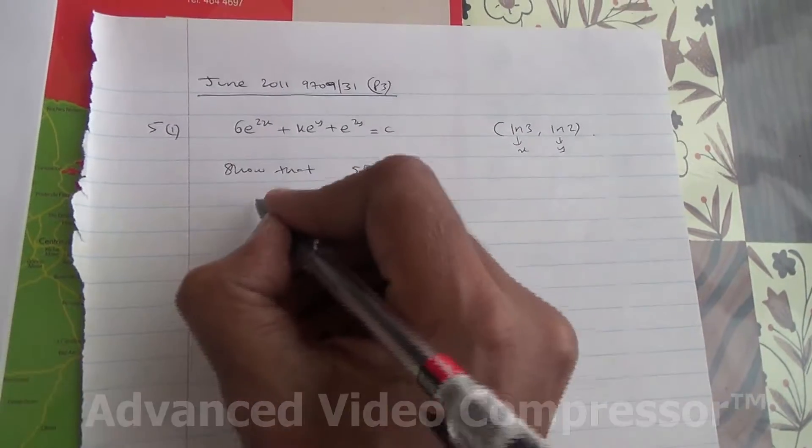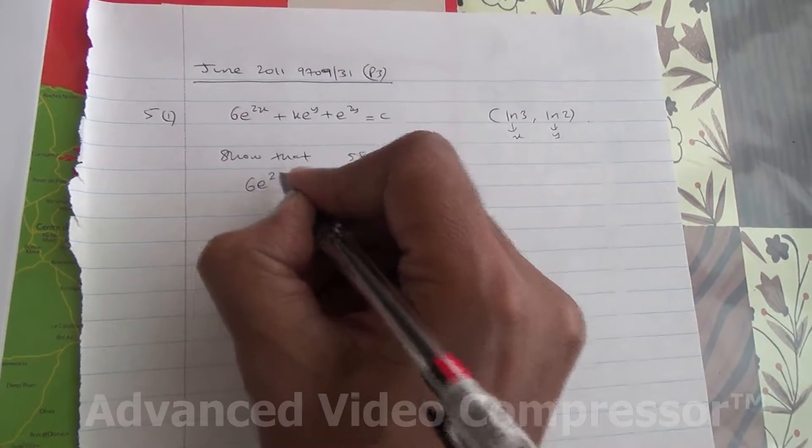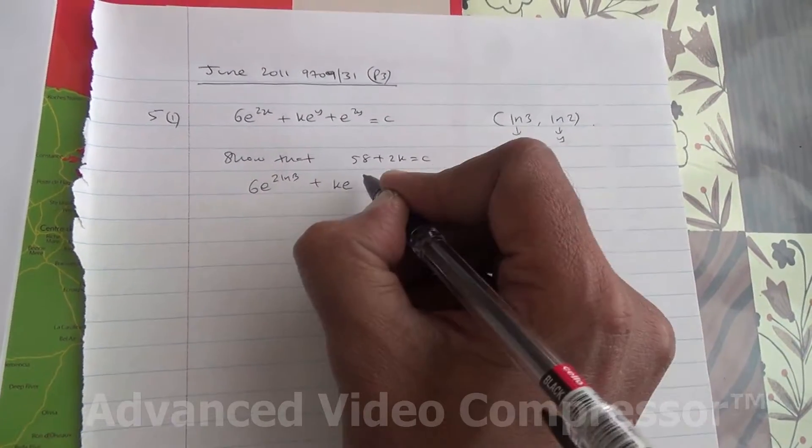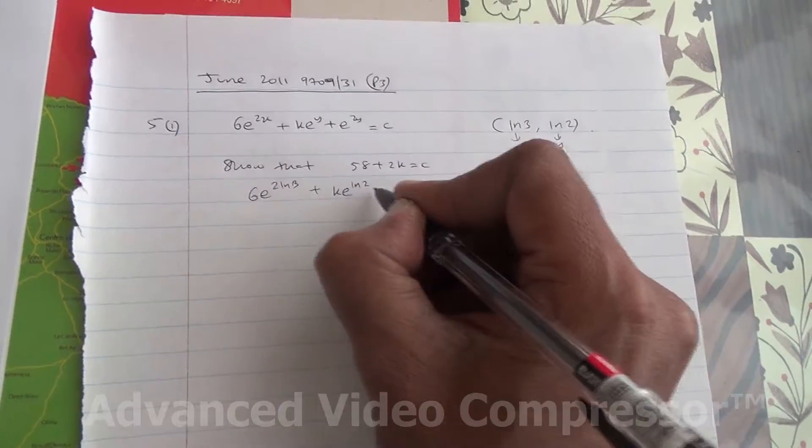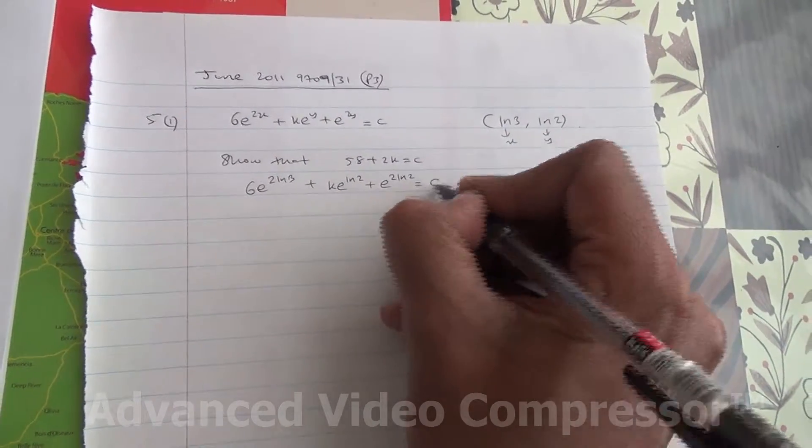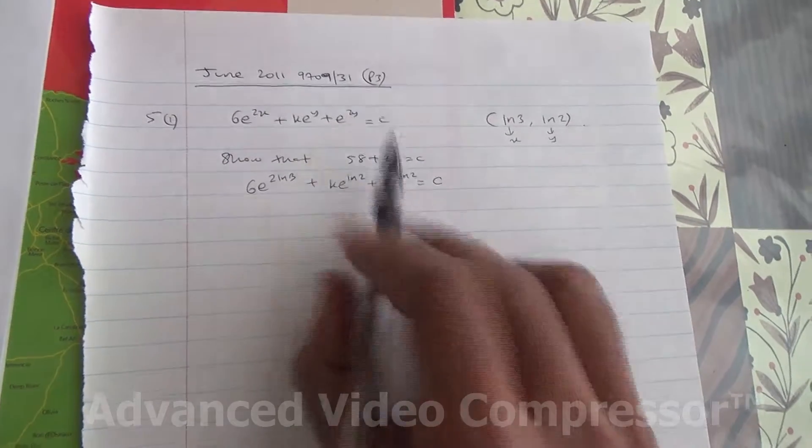So x goes in here. We've got 6e to the 2x, 2 times ln 3, because x is ln 3, plus ke to the y which is ln 2, plus e to 2 ln 2 is equal to c. Y is ln 2.